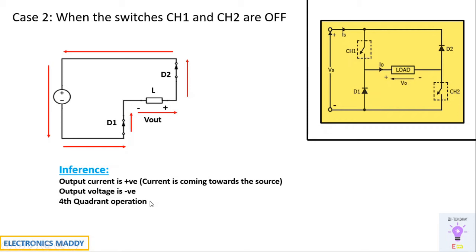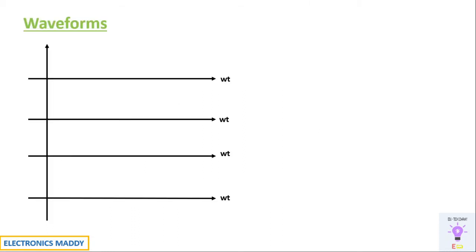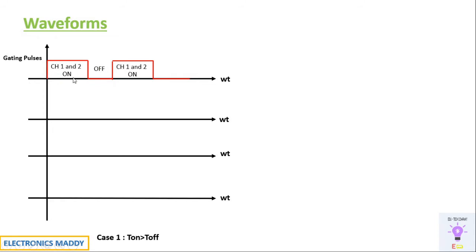It is clear that the Type D chopper operates in the first quadrant and the fourth quadrant. Now let's correlate with the waveforms. We are considering two cases: when Ton is greater than Toff. The gating pulses look like this — CH1 and CH2 are on, then off, then on. The pulse width and duty ratio of CH1 and CH2 are much higher, meaning Ton is greater than Toff.